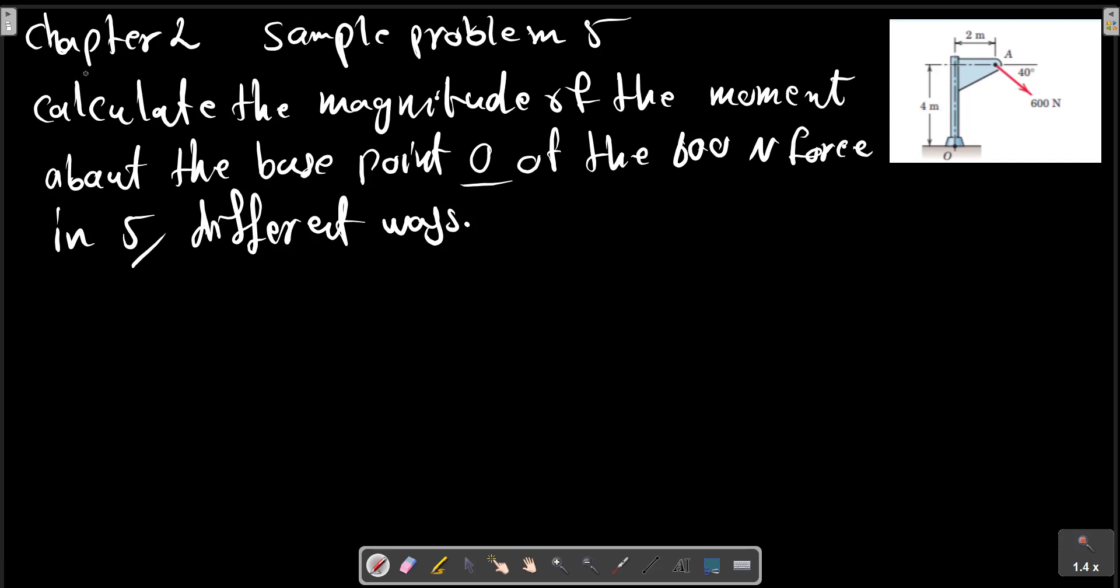Chapter 2 Sample Problem 5. Calculate the magnitude of the moment about the base point O of the 600 Newton meter force in 5 different ways.